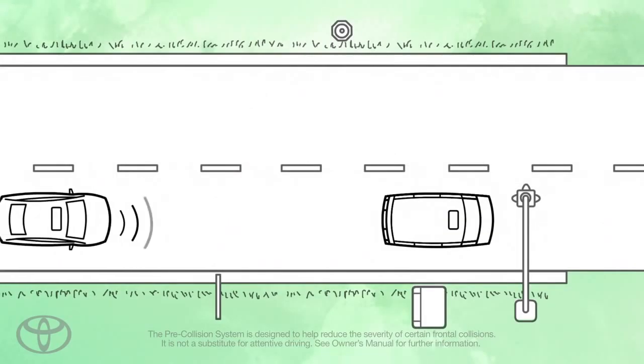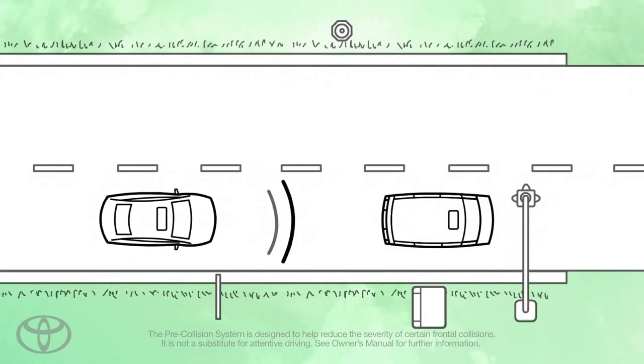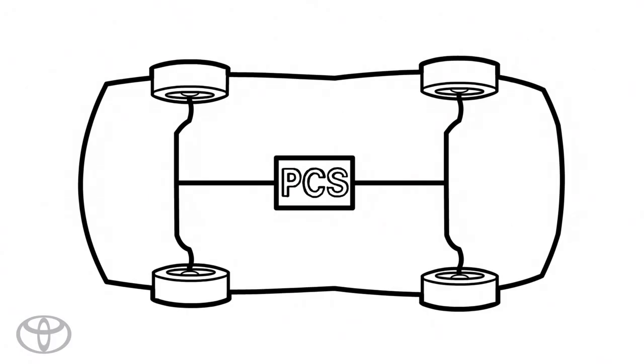When the radar senses a high probability of frontal collision, a sensor behind the grille alerts the driver with a warning light, alarm, and a message in the instrument display to apply the brakes, which are then prepped for maximum braking force.